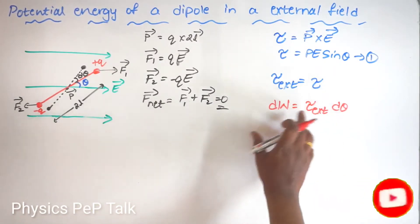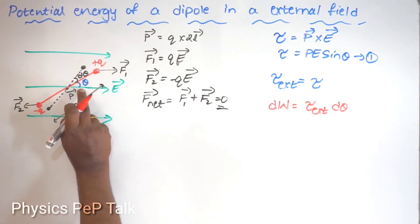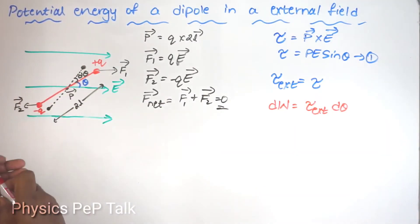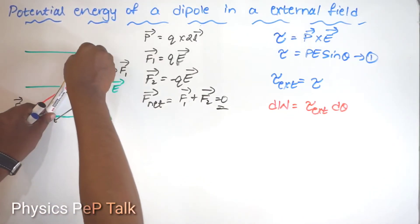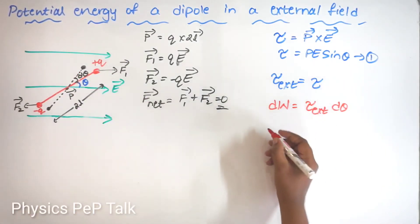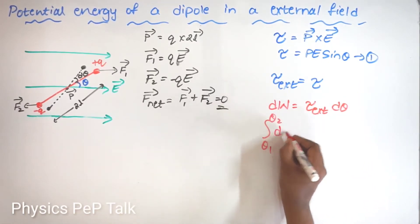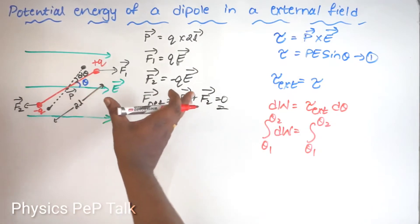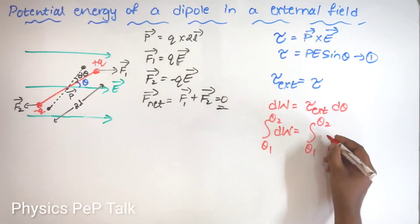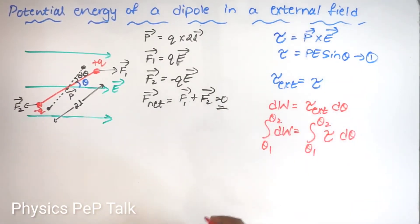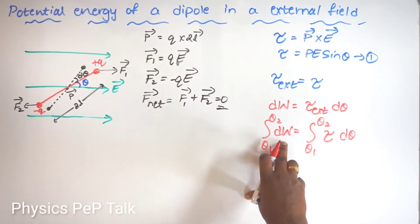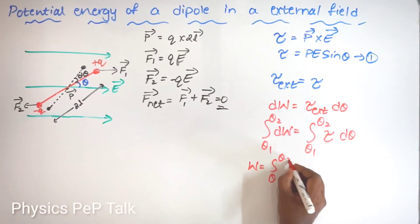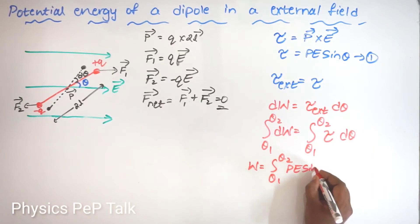For the complete work done, I have to integrate from the initial angle θ1 to the final angle θ2. So the total work done W equals the integral from θ1 to θ2 of PE sin θ dθ. Since PE is a constant, and the integral of sin θ is −cos θ, this gives W = −PE [cos θ] from θ1 to θ2.